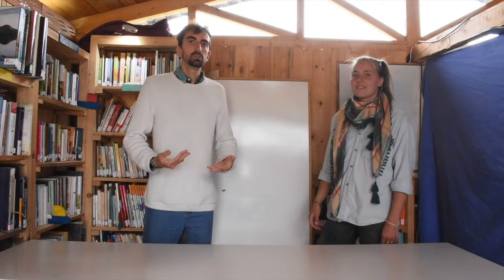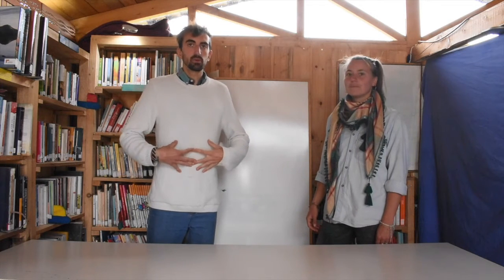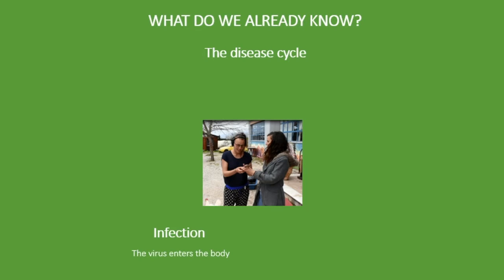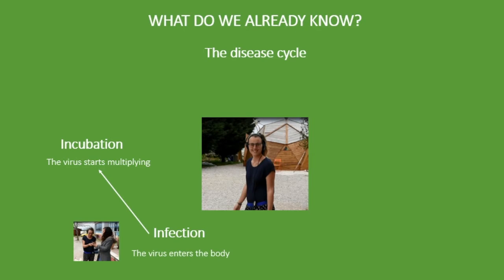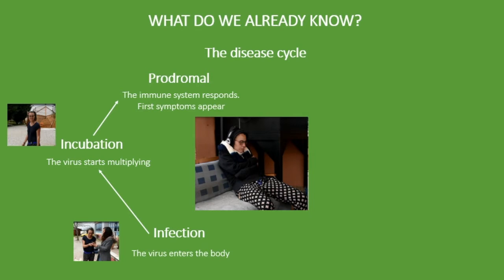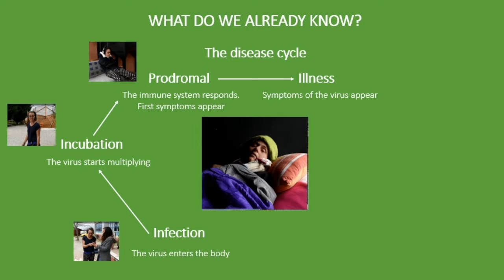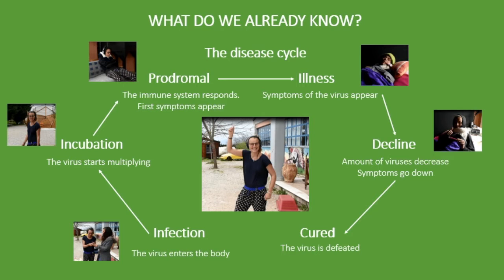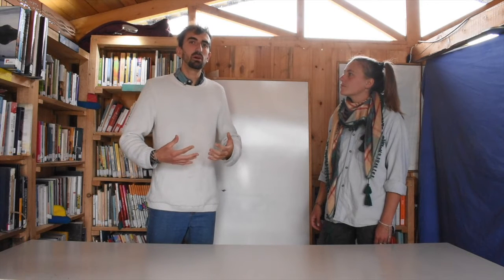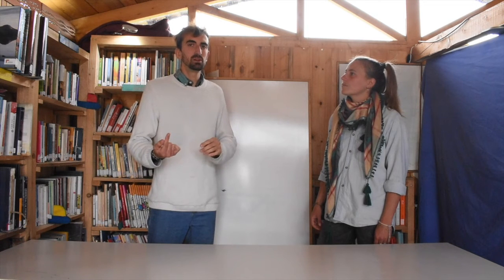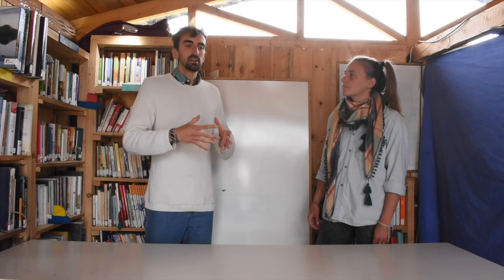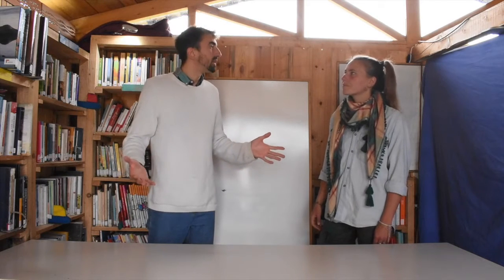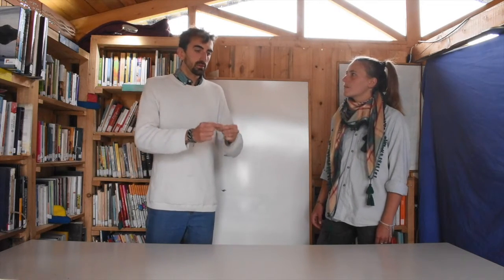In the last few classes, we saw how our body can defend from viruses. But we have always been talking about us as one person, as an individual. But why are there some diseases that affect small amounts of people and some others that can create pandemics like the coronavirus? Why do some diseases spread slowly and others spread quickly?